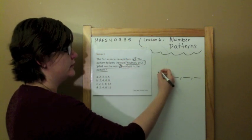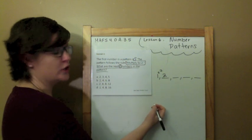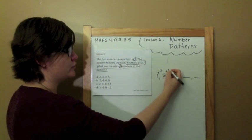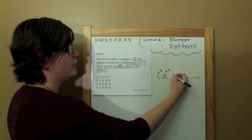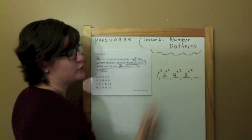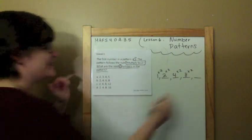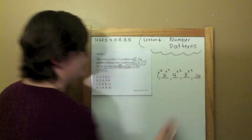The first number in the pattern is 1, and I need to find the next four numbers. Multiplying by 2. So, 1 times 2 equals 2, 2 times 2 equals 4, 4 times 2 equals 8, 8 times 2 equals 16.